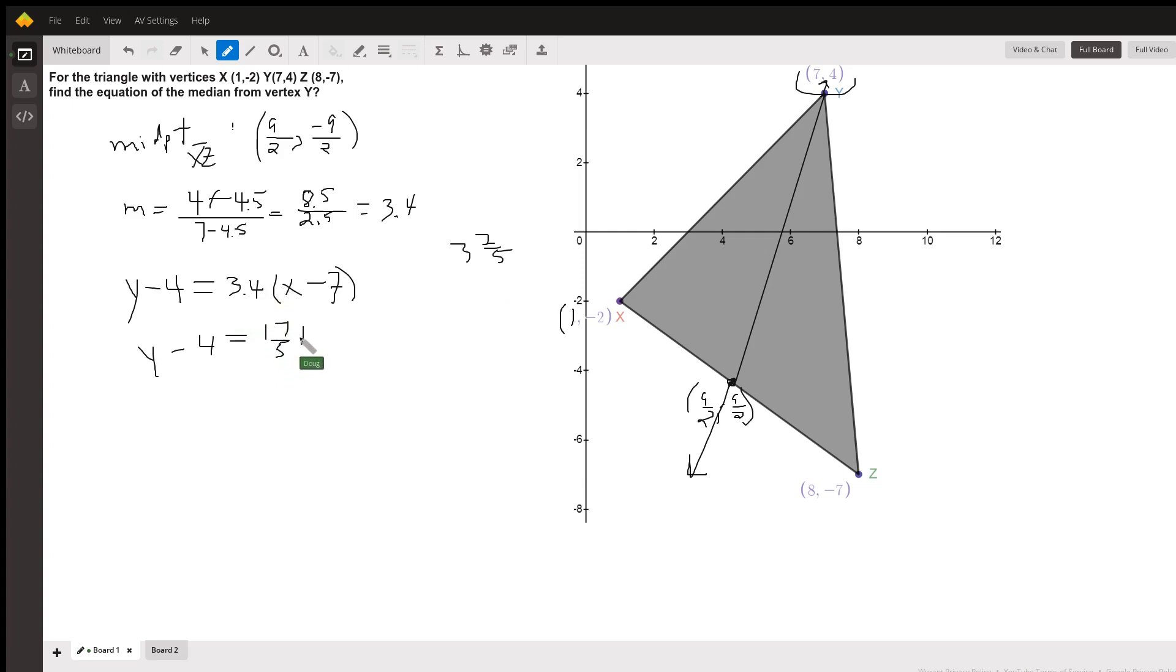Distributing, 17 fifths x, 17 fifths times 7. And then finally we could add 4 to both sides. 17 fifths x. This was 17 fifths. So that's, what, minus 49, 139 fifths, plus 4, which is 20 fifths.